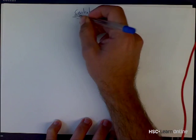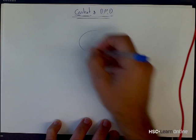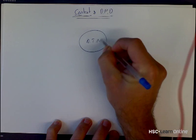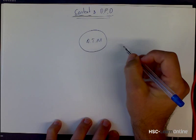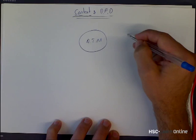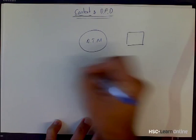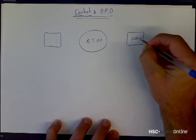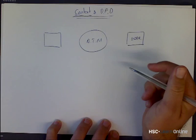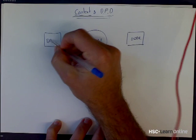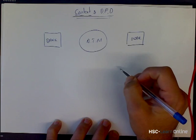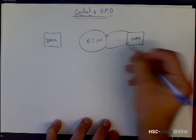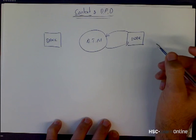First I'm going to do a context diagram, because this is the first diagram you'd always do. I draw a system and put the ATM program or software in the middle of that system. Then I need to draw any external entities in squares outside of that circle. So I need to put in any information that's coming in or out of that system to each external entity.